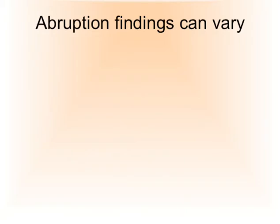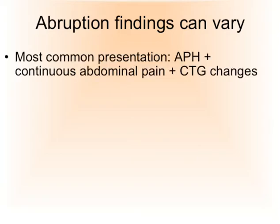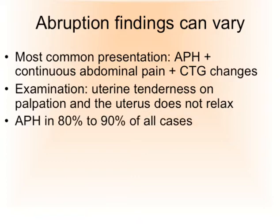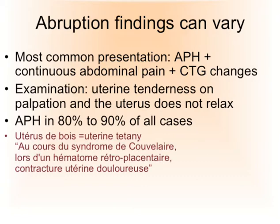Typical findings for an abruption can vary — it can be a bit of a can of worms. The most common presentation, however, is antepartum hemorrhage combined with continuous abdominal pain and CTG changes, if the abruption is significant. On examination, the uterus is very tender on palpation and does not relax in between contractions — that differentiates it from preterm labor, where we have contractions and relaxation. Antepartum hemorrhage is the case in 80 to 90% of all cases. In French this is described as 'uterus en bois' — the uterus is as hard as a piece of wood — or uterine tetany.